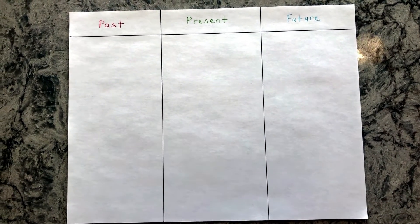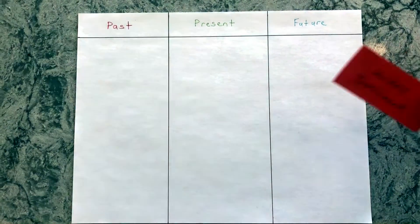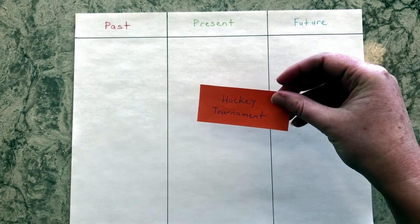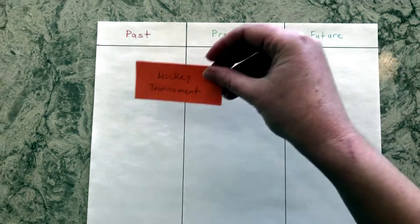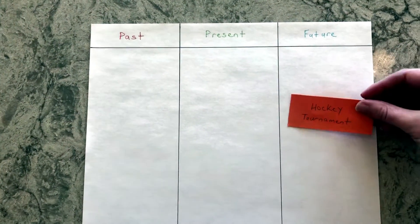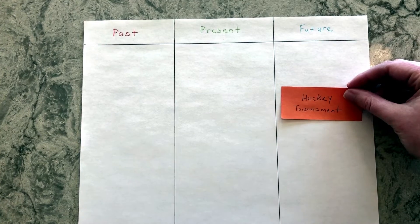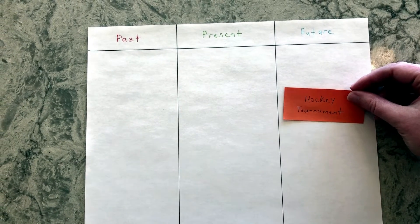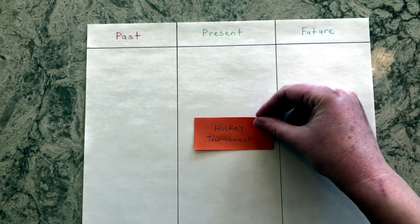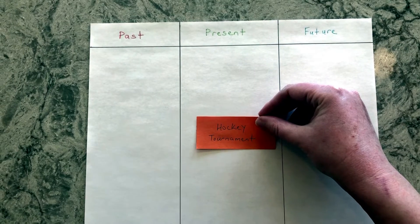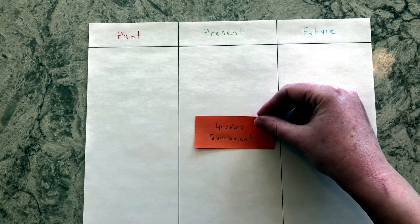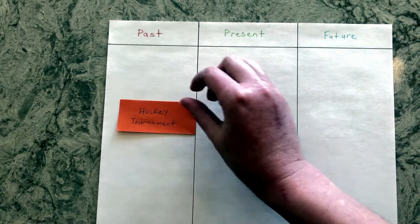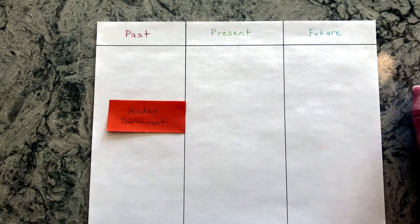For example, your child may be looking forward to a hockey tournament, so place that in the future column. Show them how it moves into the present column once they're at the tournament, and then into the past column once it's over.